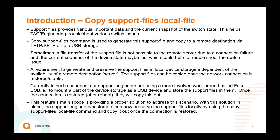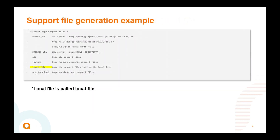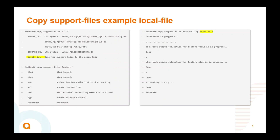This is the preferred or desired method for storing support files until such a time that network connectivity to the remote server is available. The command is very straightforward: 'copy support files,' and the new syntax option is 'local file.' The existing SFTP, TFTP, and USB storage URL options are still available, and we now also have this new local file option.